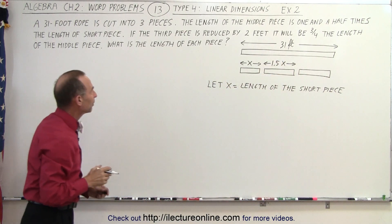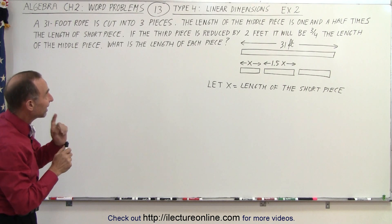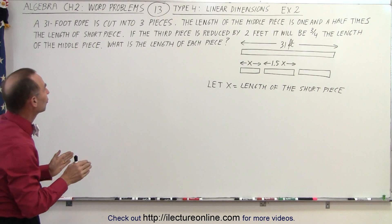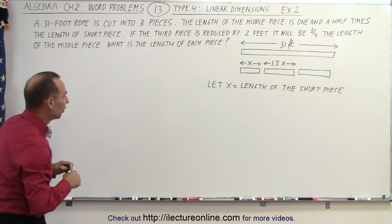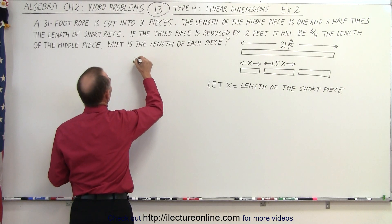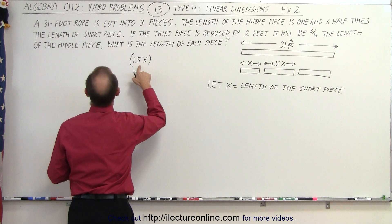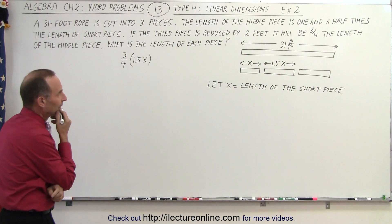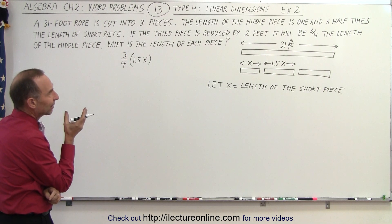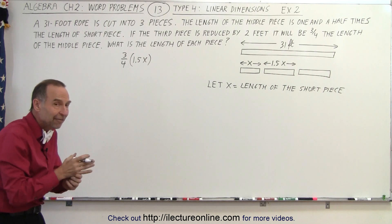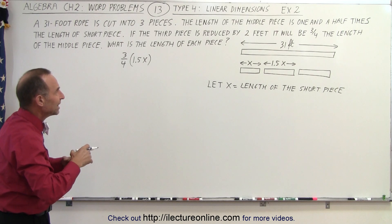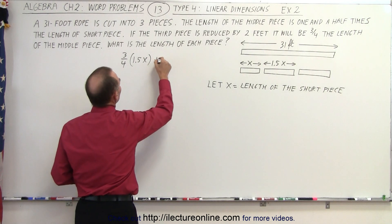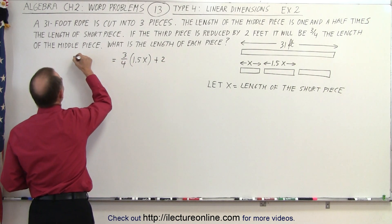Now the last piece — the third piece. It says if the third piece is reduced by two feet, it will be three quarters the length of the middle piece. The middle piece length is 1.5X, so three quarters of that would be three quarters times 1.5X. Since the piece is not reduced, we need to add two feet back, so we add two feet to get the length of the third piece.